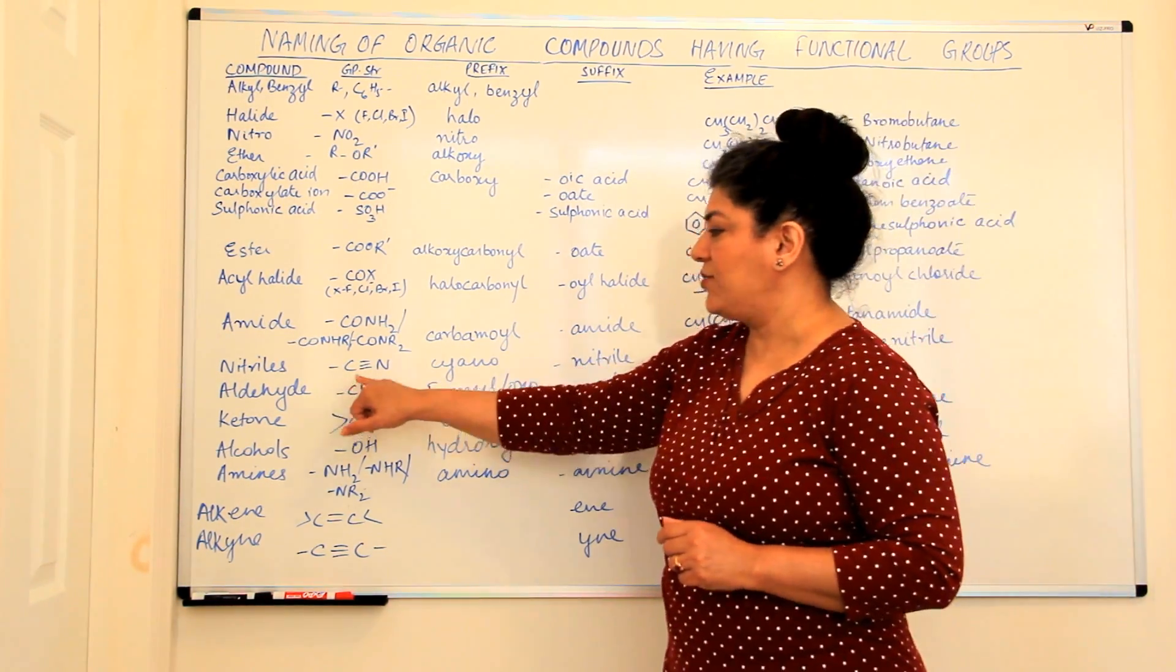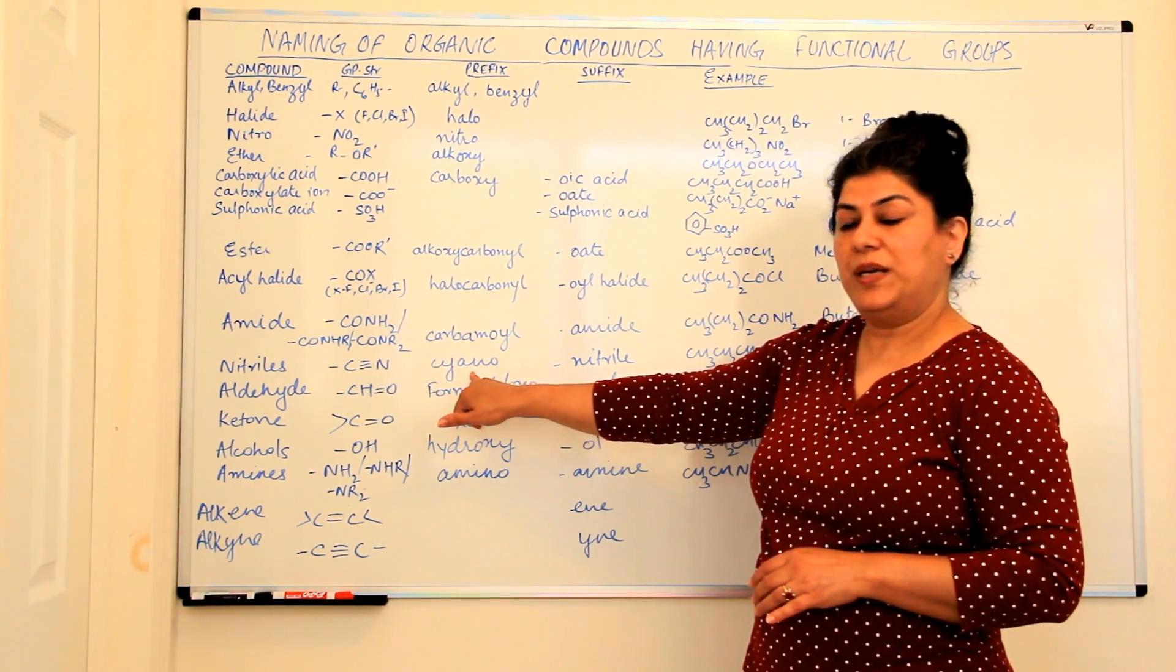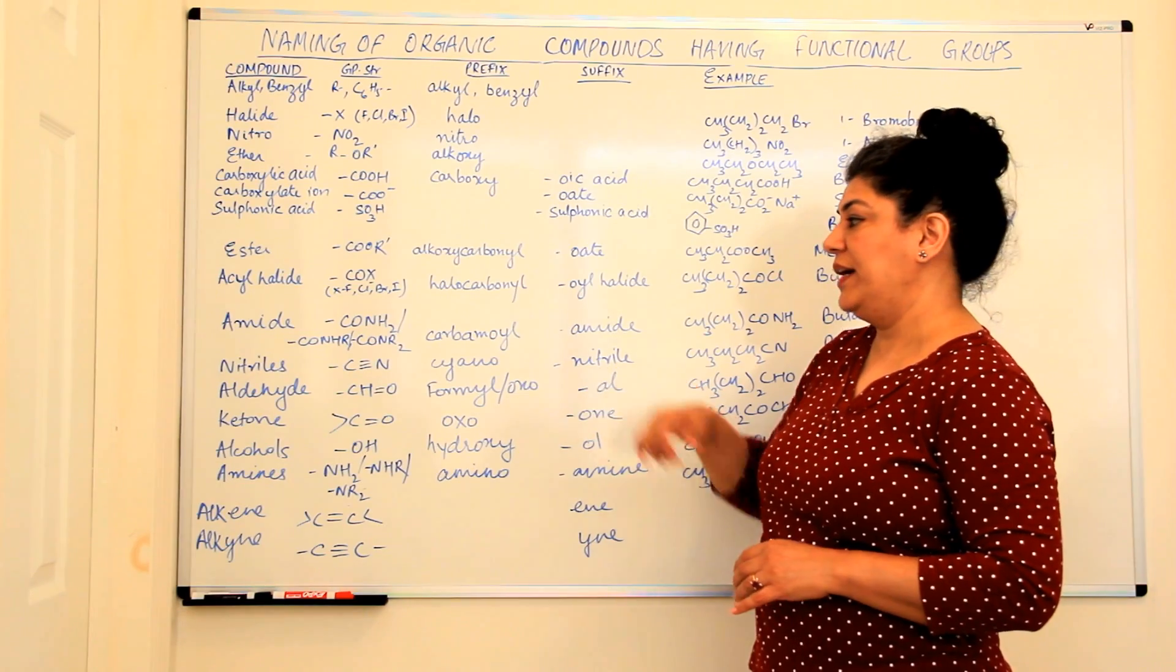Then you have nitriles, that is CN. As a prefix, it would be a cyano and a nitrile as a suffix.